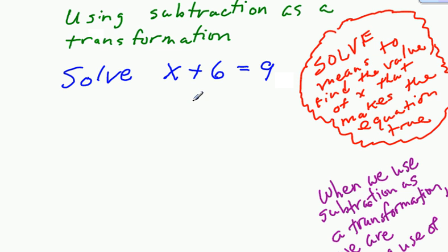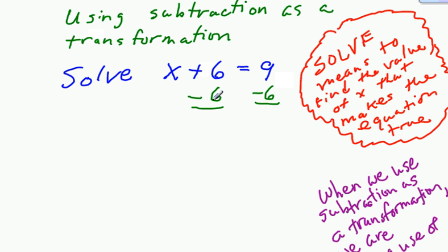What I'm going to do as a transformation is subtract 6 from both sides. Right now I want to find out what x is, and on the left side of the equation you have x and 6 together. If we take away the 6, we'll have x alone. An equation is basically a scale — 'equals' means balanced. Right now with 6 on this side with x, it balances with 9. So if I remove 6, I have x alone, but to keep the scale balanced, I have to remove 6 from this side as well, leaving 3.